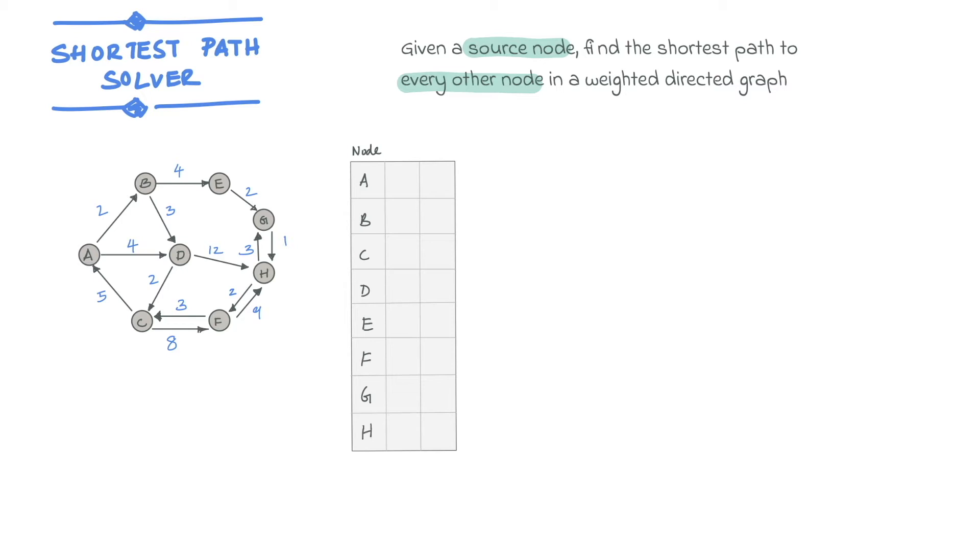The weights written above each line indicate the cost of traversing a particular edge. For this illustration, let's assume that the starting node or source is A. So we would like to find the shortest path to all other nodes from A. We will use the Dijkstra algorithm to do this.